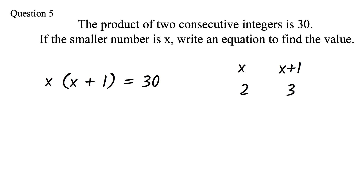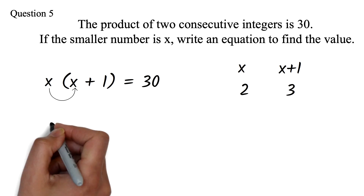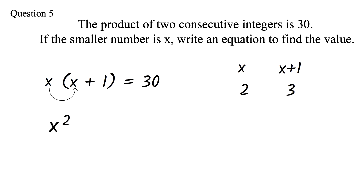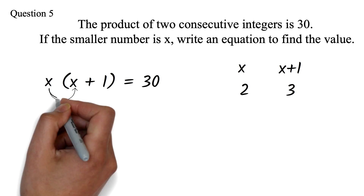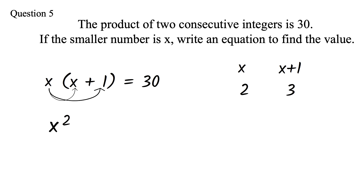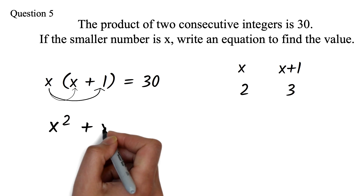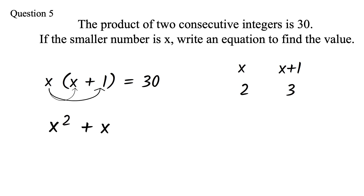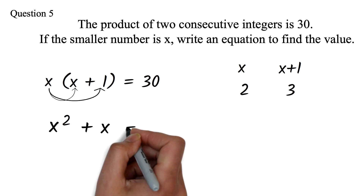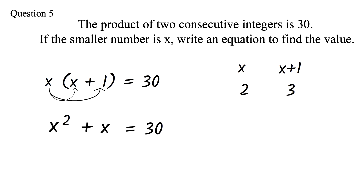We can expand this. We have x times x, which gives x squared, then x times 1, which is x. So the equation is x squared plus x equals 30.